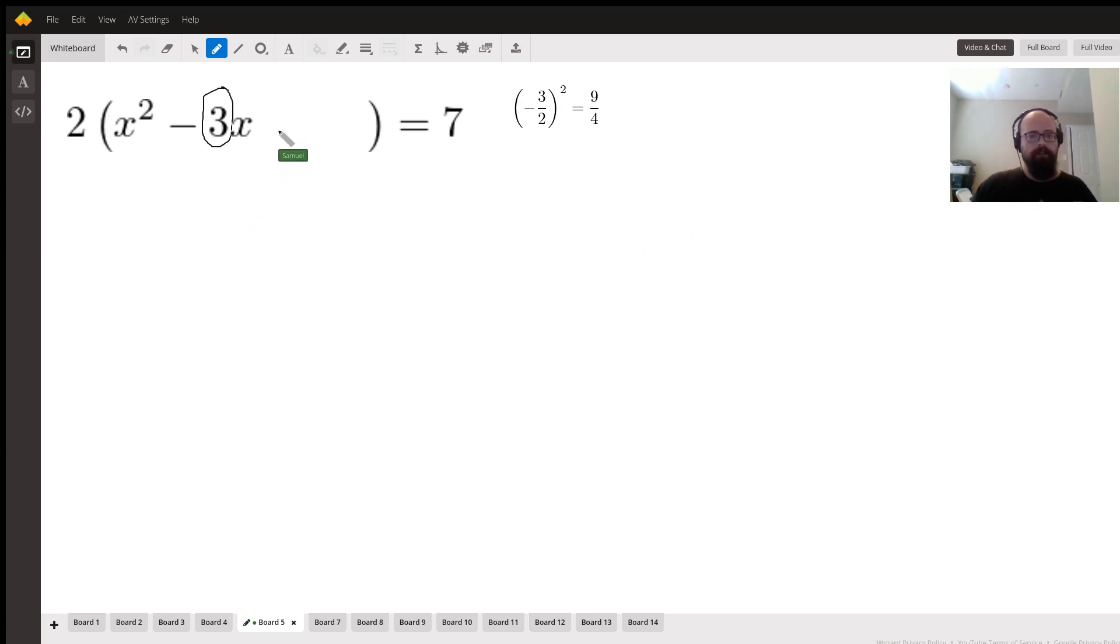So what this translates to is if we have (-3/2)², that's going to equal 9/4. So we're going to add that in this little blank space that we left for ourselves. Now, anything that you do to one side of the equation has to be reflected on the other side. So we're going to take this 9/4, multiply it by our coefficient of 2, and that's going to give us 9/2, and we're going to add that to the other side of the equation.